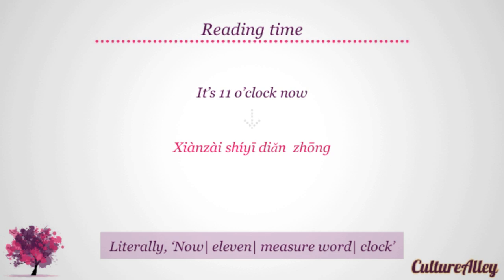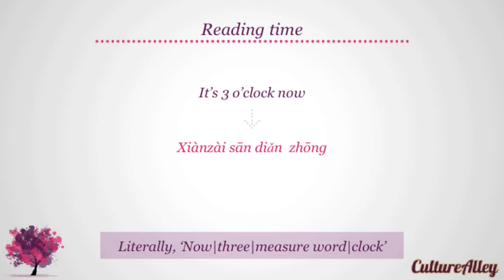Let's take a look at some examples. It's eleven o'clock now translates as xiàn zài shí yī dien zhōng. It's three o'clock now is translated as xiàn zài sān dien zhōng, literally meaning 'now three measure word clock'.